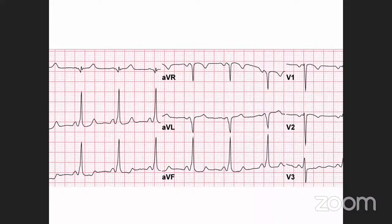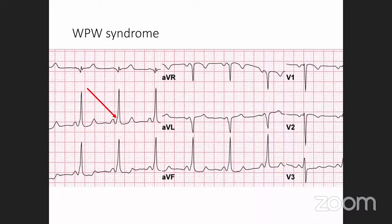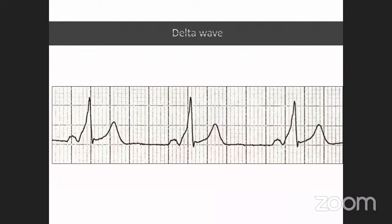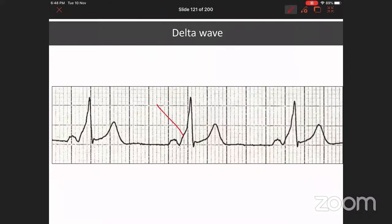Delta waves — correct. You should start by looking at the P wave and PR interval. We notice the PR interval is extremely short, and there is a slurring on the upstroke of the R wave — that is the delta wave. This slurring of the initial part of the R wave is characteristic of ventricular pre-excitation syndrome, previously called WPW or Wolf-Parkinson-White syndrome. Nowadays the preferred term is pre-excitation syndrome.